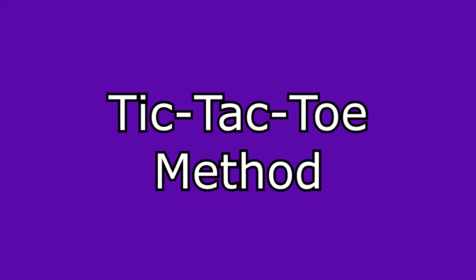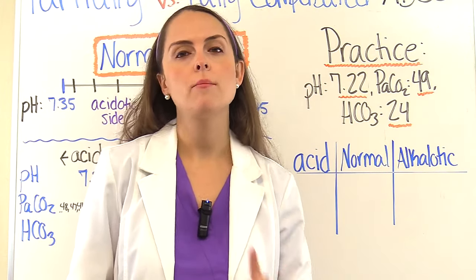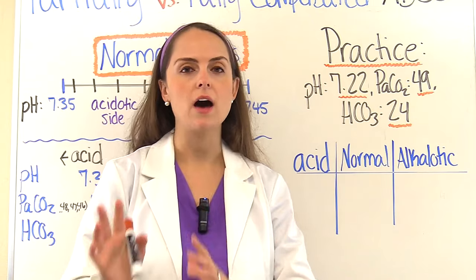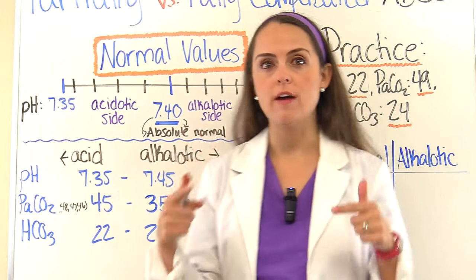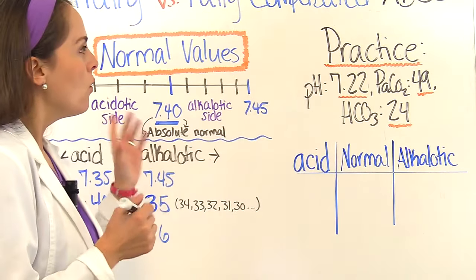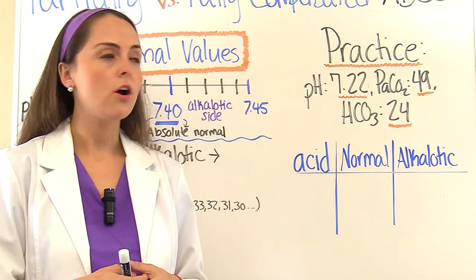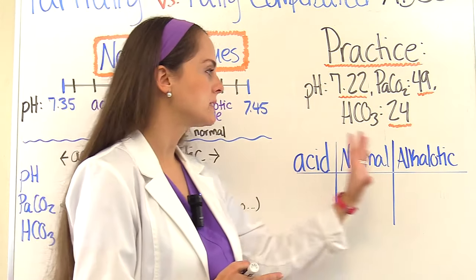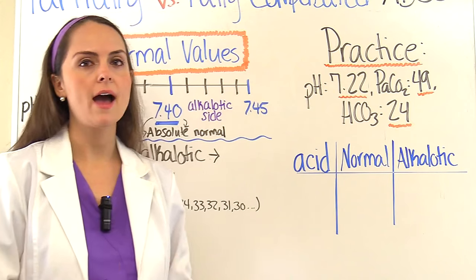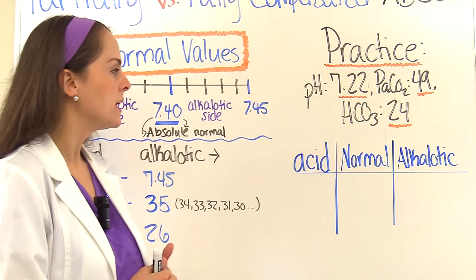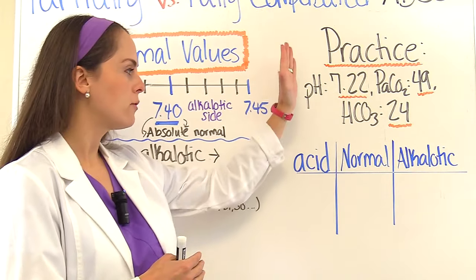Now let me demonstrate the tic-tac-toe method. The first problem has no compensation; then we'll add partial and full compensation to see how values change. Our problem: pH 7.22, PaCO2 49, bicarb 24. We set up the tic-tac-toe with columns for acid, normal, and alkalotic, and plug each value into its column.